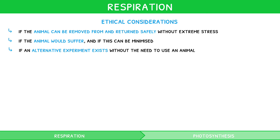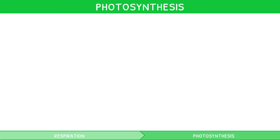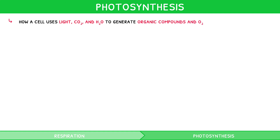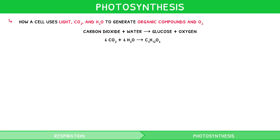You now know everything you need to know about respiration. However, some organisms can also carry out the important process of photosynthesis. Photosynthesis is carried out by all autotrophs, though the IB syllabus focuses only on plants. Photosynthesis can be defined as the process by which a cell uses light, CO2, and water to generate organic compounds and oxygen. The word equation is carbon dioxide plus water goes to glucose plus oxygen. The symbol equation is 6CO2 plus 6H2O goes to C6H12O6 plus 6O2.